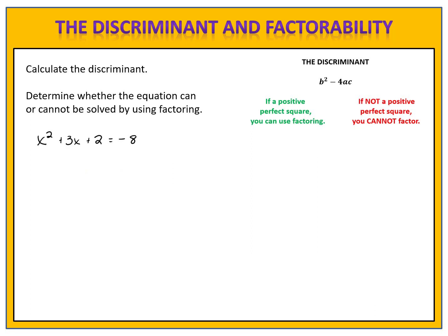In our last example, we have the equation x squared plus 3x plus 2 equals negative 8. Be careful — notice that this equation is not equal to zero, so we can't use the discriminant test yet. We must begin by adding 8 to each side so that we have an equation in standard form that's equal to zero: x squared plus 3x plus 10 equals zero. We identify the values of a, b, and c. A is the number in front of x squared, and I see no number written there, but there really is an invisible one. b and c are easily identifiable from the equation. So a equals 1, b equals 3, and c equals 10.